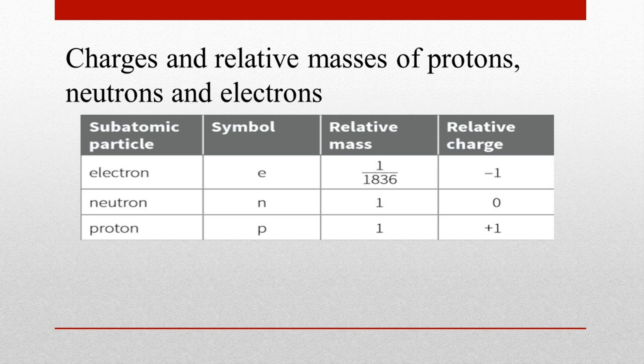1/1836 and a relative charge of -1. Neutrons have a relative mass of 1 and a relative charge of 0. Protons have a relative mass of 1 and a relative charge of +1. The mass of a proton is 1836 times the mass of an electron.